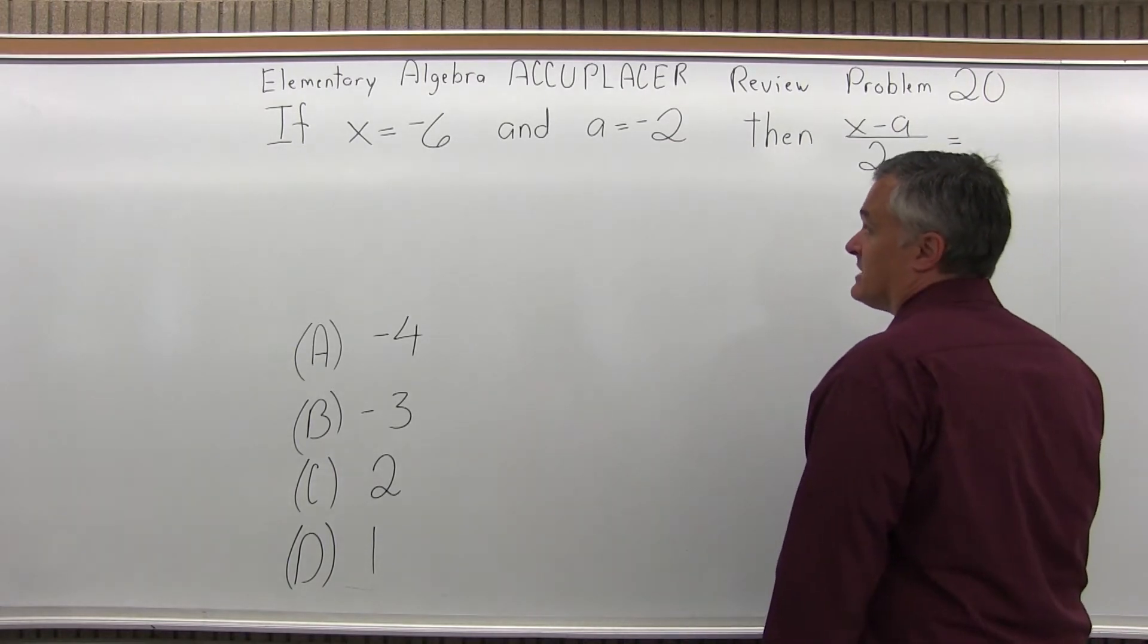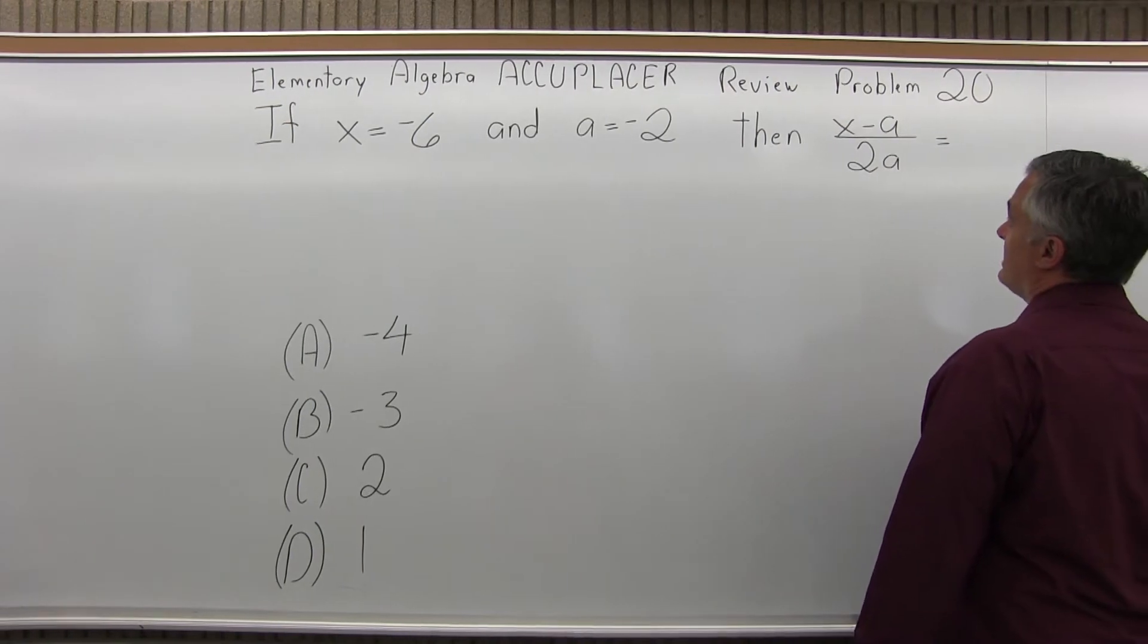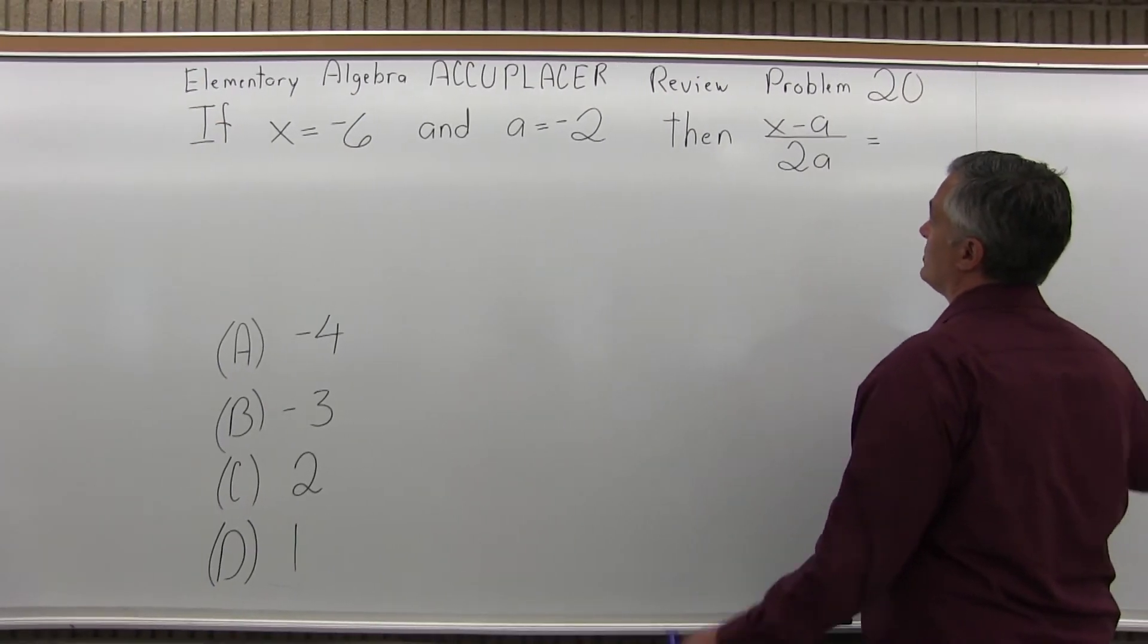If x equals negative 6 and a equals negative 2, then (x minus a) over (2a) equals what?